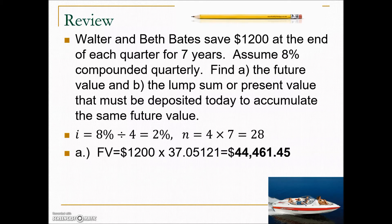We'll look on a future value table and find the intersection of our I and N, which gives us this value. Multiplying it by the regular savings deposit of $1,200 means that in 7 years, this savings plan — if they follow it through — will have a balance of $44,461.45.